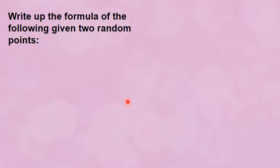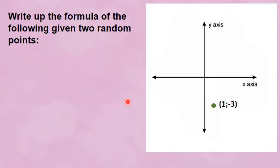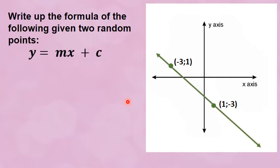Let's have a look at another example where two points are given. The one point is (1, -3) and the other is (3, 1). I draw that line and ask you to work out the equation of the straight line. Again your cookie cutter mold: y is equal to mx plus c. We do not know where it cuts the y-axis, so we cannot start with the back side — we have to start with the gradient. I want you to take note of the double negatives.